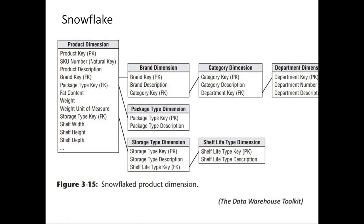What is the disadvantage of the snowflake design? Now if we want to fetch the brand description, the fact table has to make a join to the product dimension table on the product key, and then from the product dimension table, fetch the brand key, and the brand key would then make a join to the brand dimension table to fetch the brand description. So for the same query that would have been a single join in the star schema, it now converts to two joins in the snowflake schema. And for other tables like the category dimension, it would convert to multiple joins, making the queries a little bit slower. That is the disadvantage of the snowflake schema.